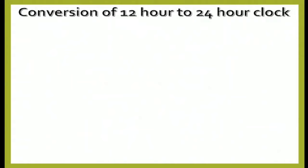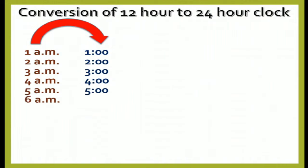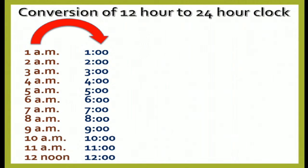In 24-hour clock we don't write AM or PM. So 1 AM we write as 1 hour, 2 AM as 2 hours, 3 AM as 3 hours, 4 AM as 4 hours, 5 AM as 5 hours, 6 AM as 6 hours, 7 AM as 7 hours, 8 AM as 8 hours, 9 AM as 9 hours, 10 AM as 10 hours, 11 AM as 11 hours, and 12 noon as 12 hours. In this way we convert 12-hour clock to 24-hour clock.